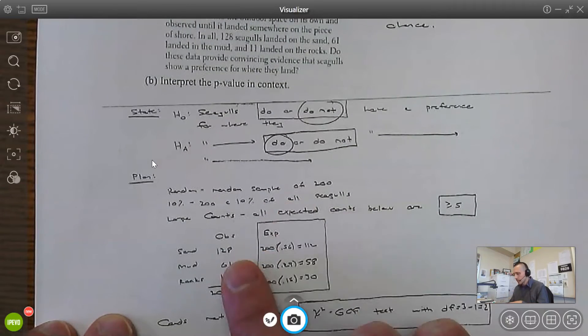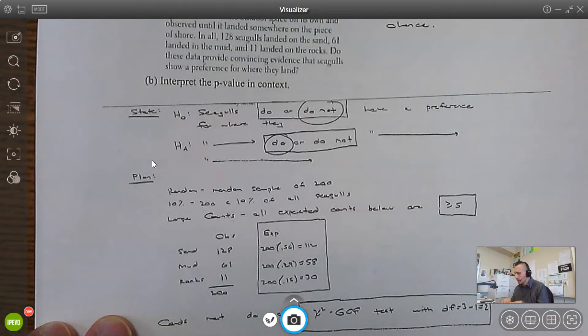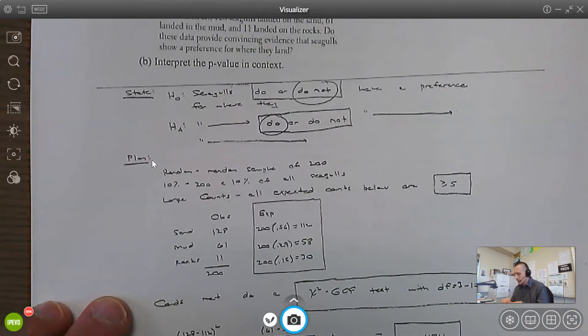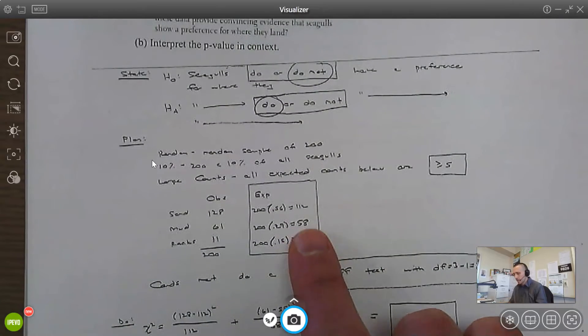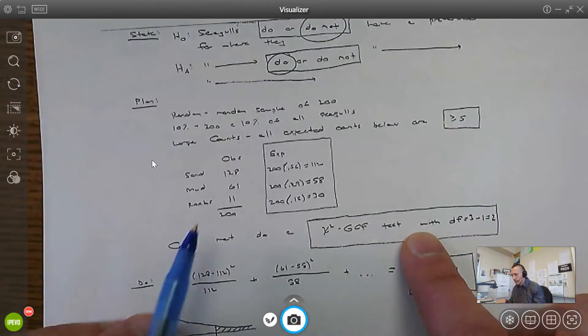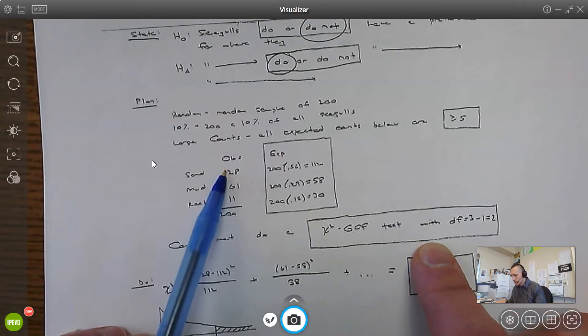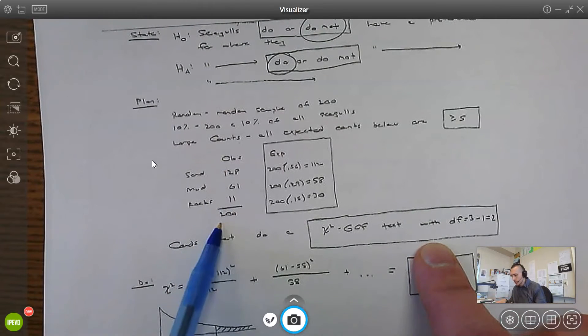There's a random sample of 200 seagulls. 200 is less than 10% of all seagulls. I'll get to the expected counts in a minute, but they're all at least five. How did I calculate them?